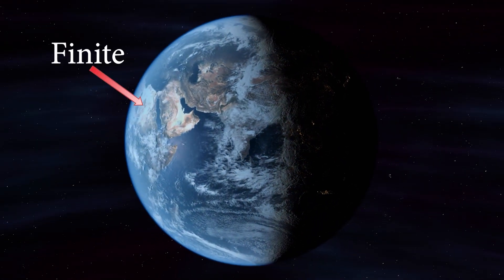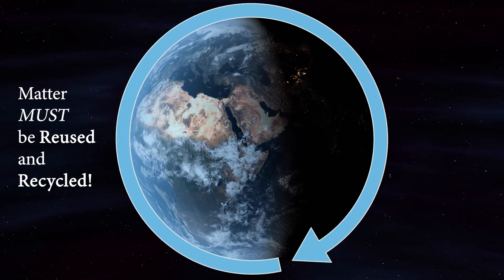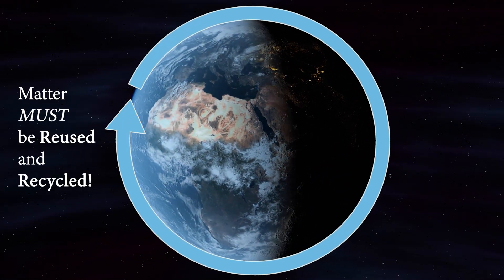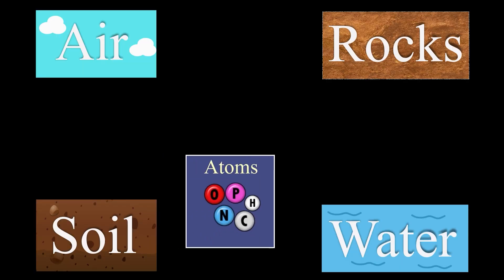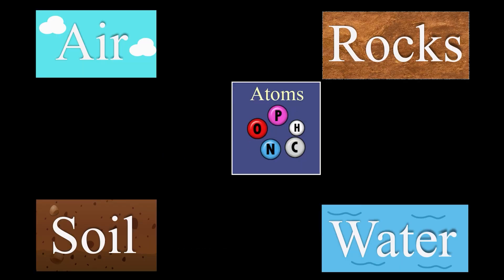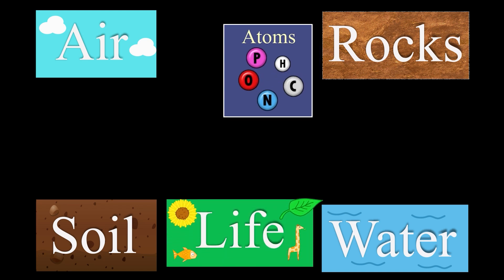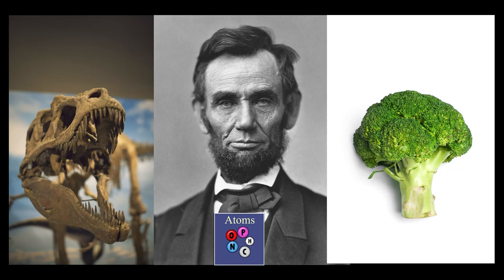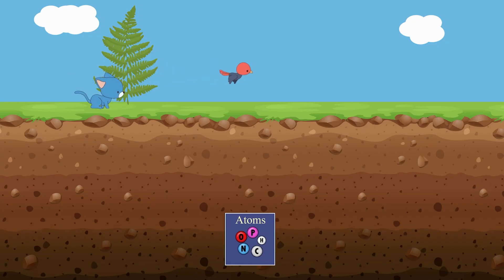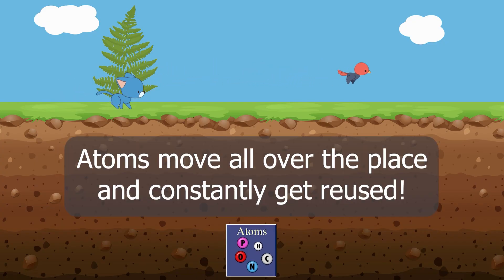Because the earth is finite, matter has to be reused and recycled over and over again. So the atoms that are in you were once in the air, in soil, in water, and in rocks. These atoms have also been used by countless other living things, from dinosaurs, to broccoli plants, to Abraham Lincoln. And after they leave you, they will become part of other living things, or of the environment.